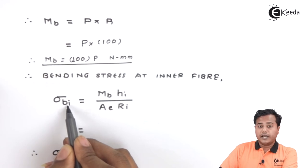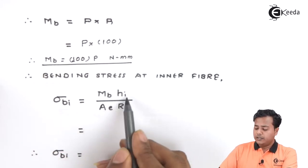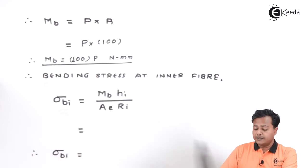So this is how let us proceed with the bending stress at the inner surface or inner fiber. And that's why it is mentioned or suffixed as I, bending stress I, inner one. The formula is quite simple in this case. Let's substitute the values.